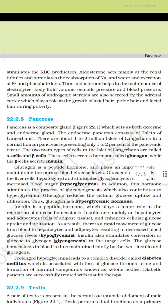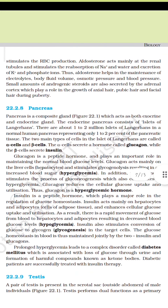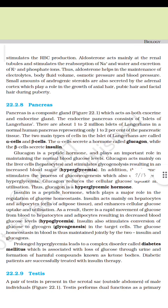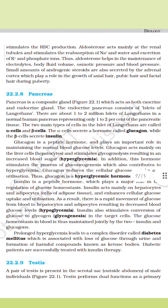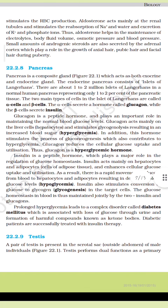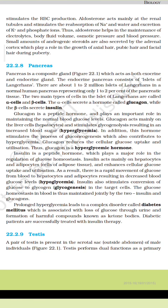Aldosterone acts mainly at the renal tubules and stimulates the reabsorption of sodium ions and water and excretion of potassium and phosphate ions. Thus, aldosterone helps in the maintenance of electrolytes, body fluid volume, osmotic pressure and blood pressure. Small amounts of androgenic steroids are also secreted by the adrenal cortex, which play a role in the growth of axillary hair, pubic hair and facial hair during puberty.